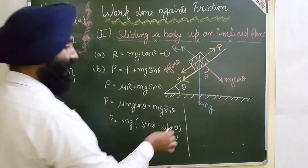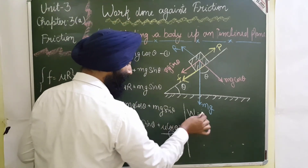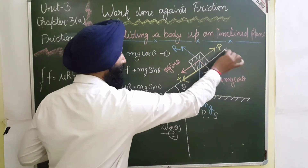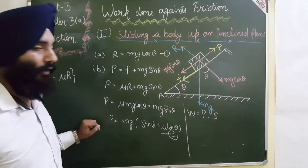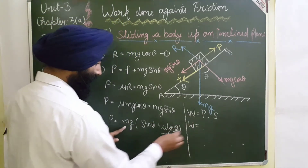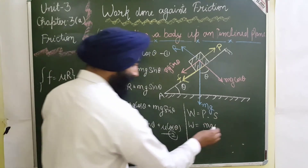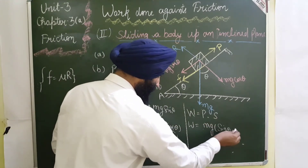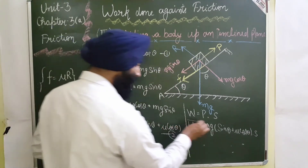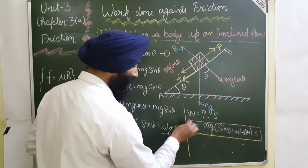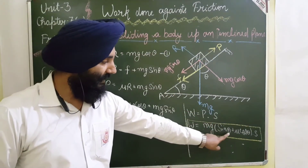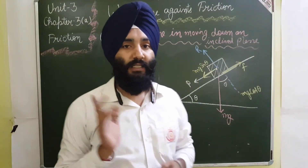Now I have to find the work done. Work done equals force into displacement. Force is P and displacement from A to B is S. So work done equals P × S equals Mg(sin θ + μ cos θ) × S. This is the value of work done when the body is moving upward against the frictional force: W = Mg(sin θ + μ cos θ)S.